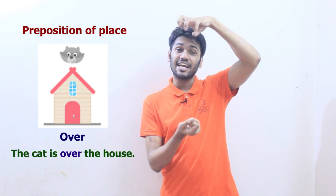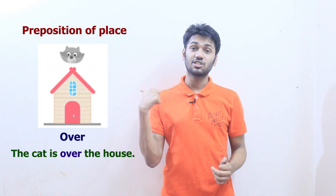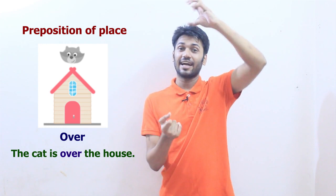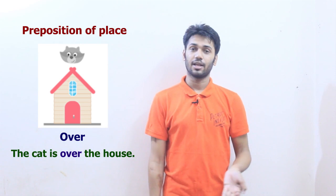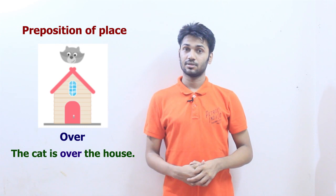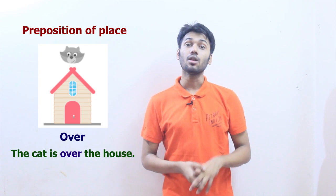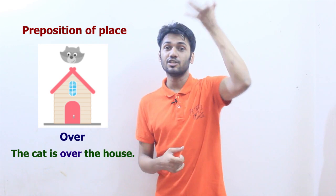The next one is 'over.' The cat is over the house. 'Over' can be used when the object is in the air and staying above you — not connected to the roof. The cat is flying in the air above the house, so we say 'over.' If somebody jumps over me, the plane is flying over my head, the ball bounces over him — every time it should be in the air. Only in that case you could use 'over.'